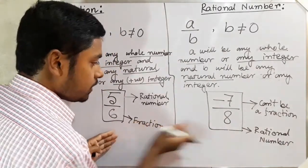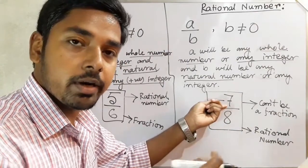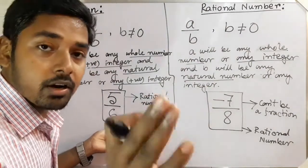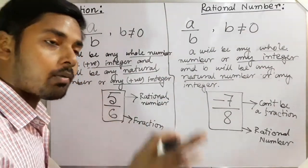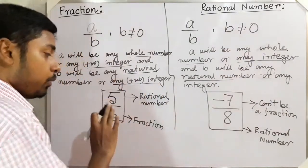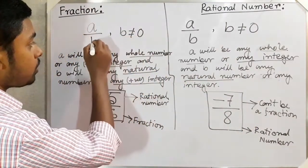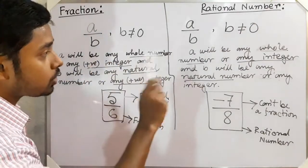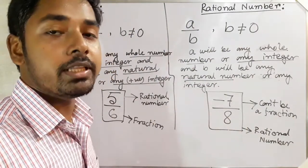In a rational number, we can take a negative integer in the denominator or in the numerator. In a fraction, we cannot take a negative integer for either the denominator or numerator — only positive values are allowed. Also remember that b, the denominator, should not be zero in both cases.